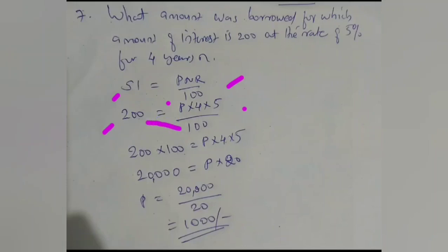Here this 100 can be taken to this side, so 200 into 100 is equal to P into 4 into 5.